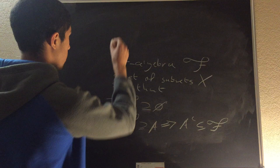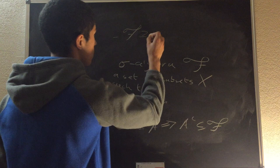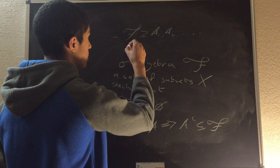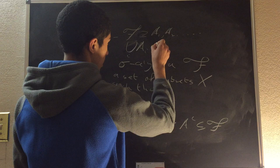And our third property is that if we have in our sigma-algebra F sets A1, A2, dot dot dot, then the union over i of each of these sets is contained within our sigma-algebra.